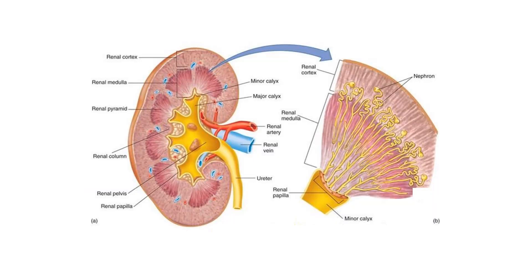Here in this diagram we can see the different parts of the kidney, such as the renal cortex, the medulla, the column, and the nephrons. We'll go into quite a bit of detail in the next few slides.